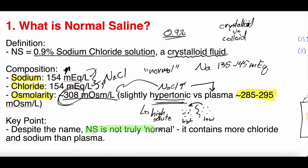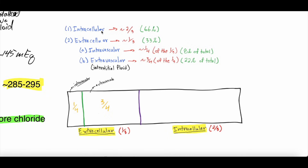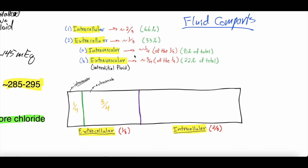Normal saline is not truly normal — it contains more chloride and more sodium than the plasma. Why is this important? Fluid compartments in the body involve the intracellular space and the extracellular space. Within the extracellular space, there's the intravascular space — inside blood vessels — and the extravascular space outside blood vessels, like the interstitial fluid. These compartments are separated by the cell membrane, and fluid movement between intracellular and extracellular is driven by tonicity because it has to cross a cell membrane.